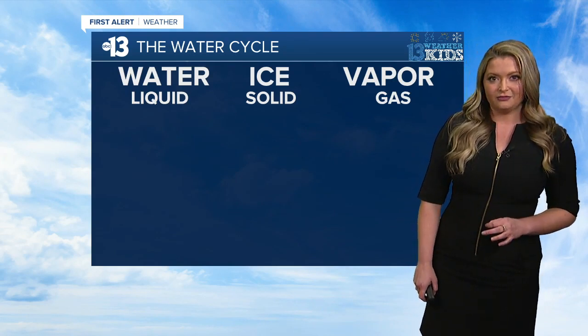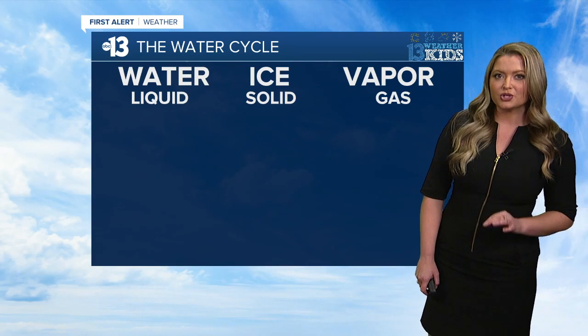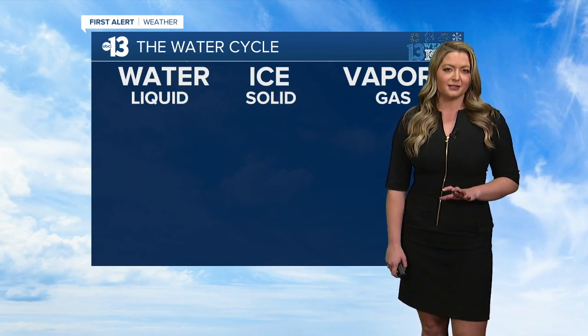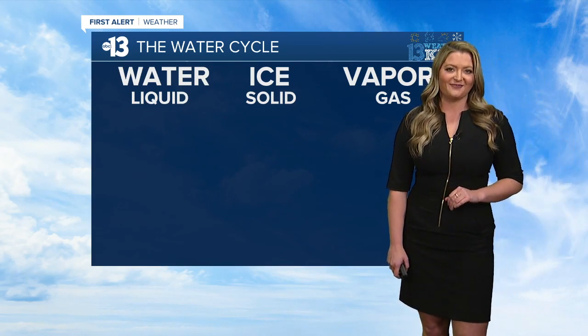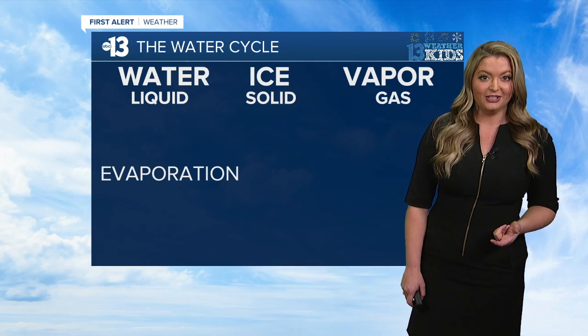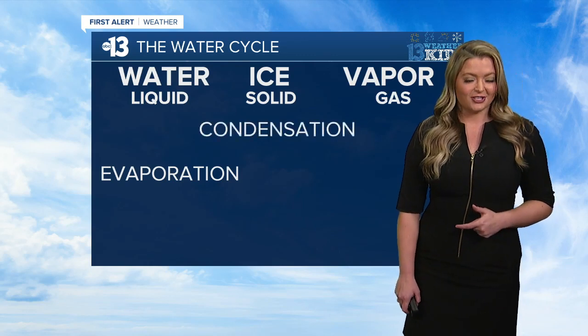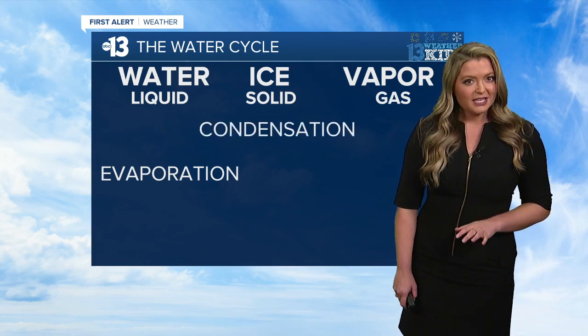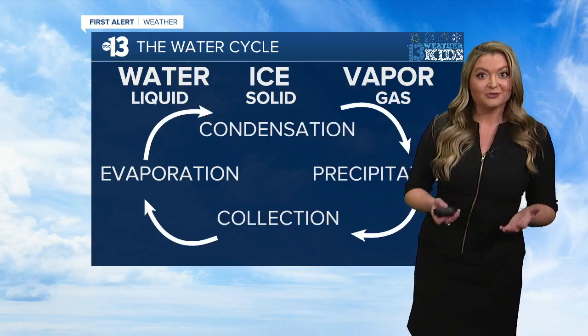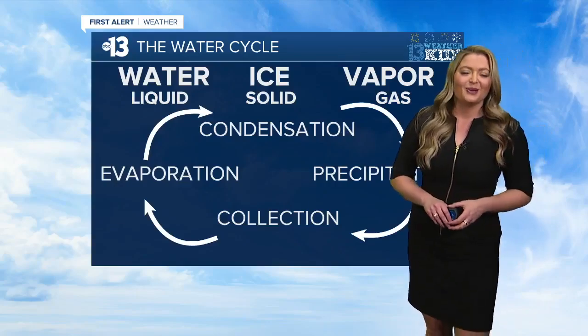Now, the cycle itself — in order to push water through the cycle, a few processes have to take place, namely evaporation, condensation, precipitation, and collection. So let's walk through it. We start first at the ocean, where the bulk of the world's liquid water is held.